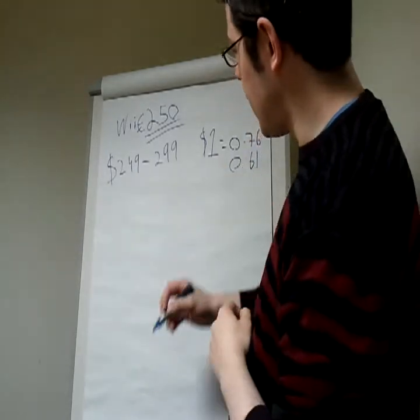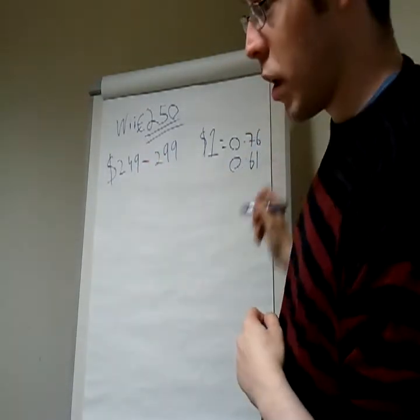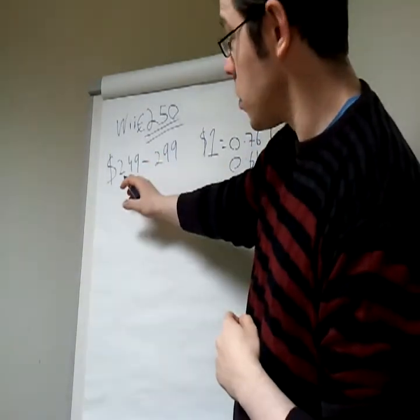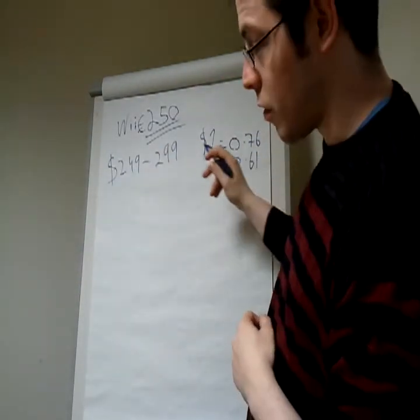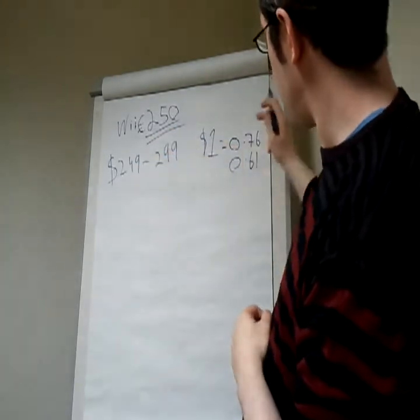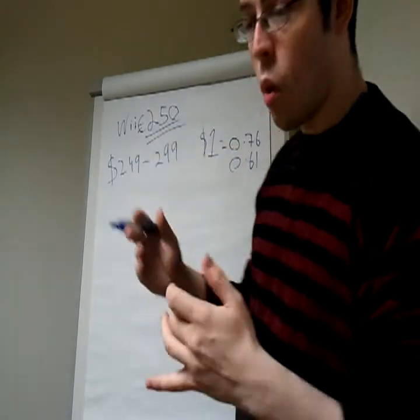So, if we take these figures and we apply these conversions. In other words, multiply $249 by this and $299 by this, and let's repeat for $249 by that and that and $299 by that and that, what do we get?